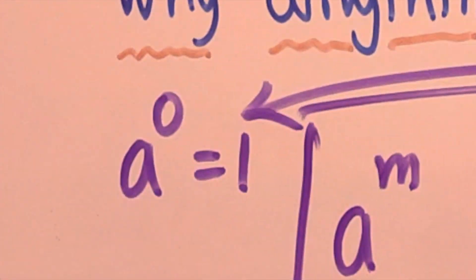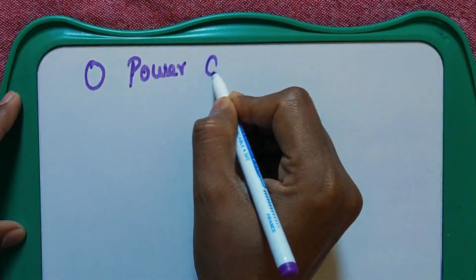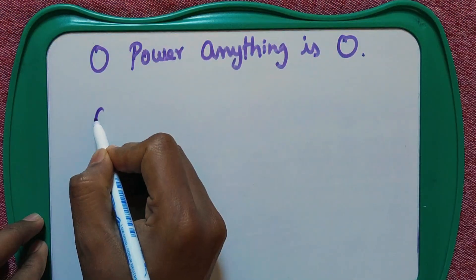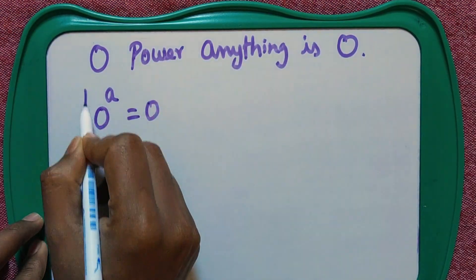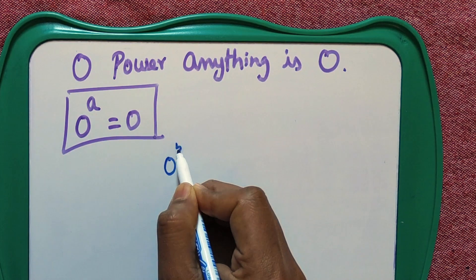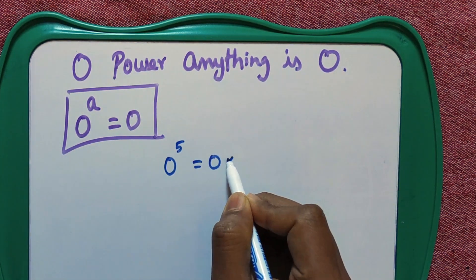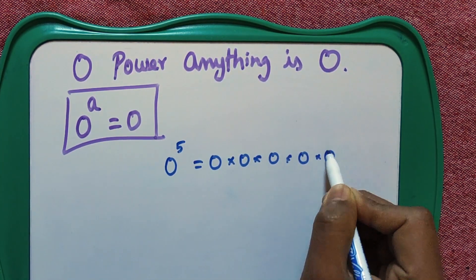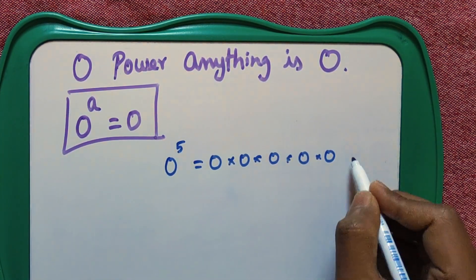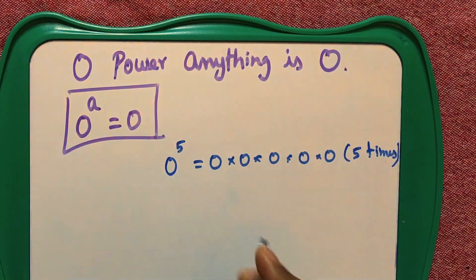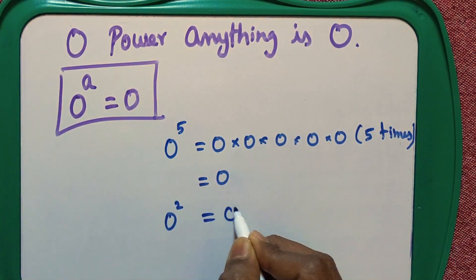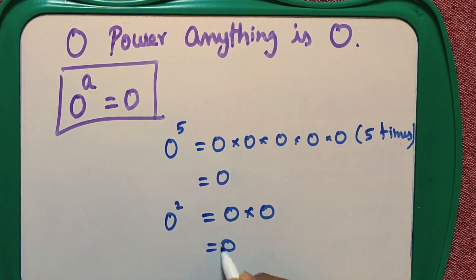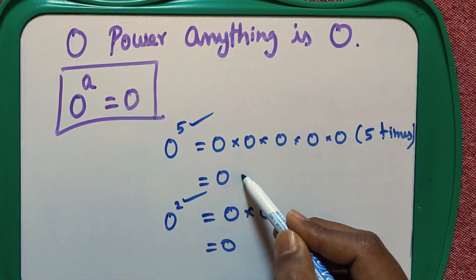The first one is done. Now let's go to the next one: 0 power anything is 0. Let's understand with an example. 0 power 5 can be written as 0 multiplied 5 times, and we will get 0 only. Even if you multiply any number of zeros together, you will always get 0. So that holds good.